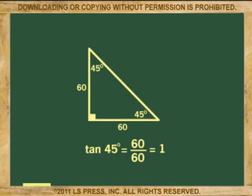From this, we realize that the tangent of 45 degrees must be 1, because all 45-45-90 triangles have equal legs, making both numerator and denominator the same value, and the quotient is, of course, 1.